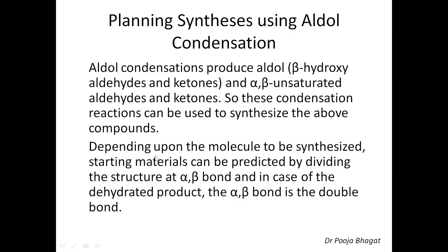Till now we have discussed what is aldol condensation, and now I am going to discuss how we can use aldol condensation in planning the synthesis. We know that aldol condensations are used to produce aldol — that is, beta-hydroxy aldehydes or ketones — and alpha-beta unsaturated aldehydes or ketones. Depending upon the molecule to be synthesized, starting materials can be predicted by dividing the structure at the alpha-beta bond. In the case of the dehydrated product, the alpha-beta bond is the double bond. Let us discuss some examples.